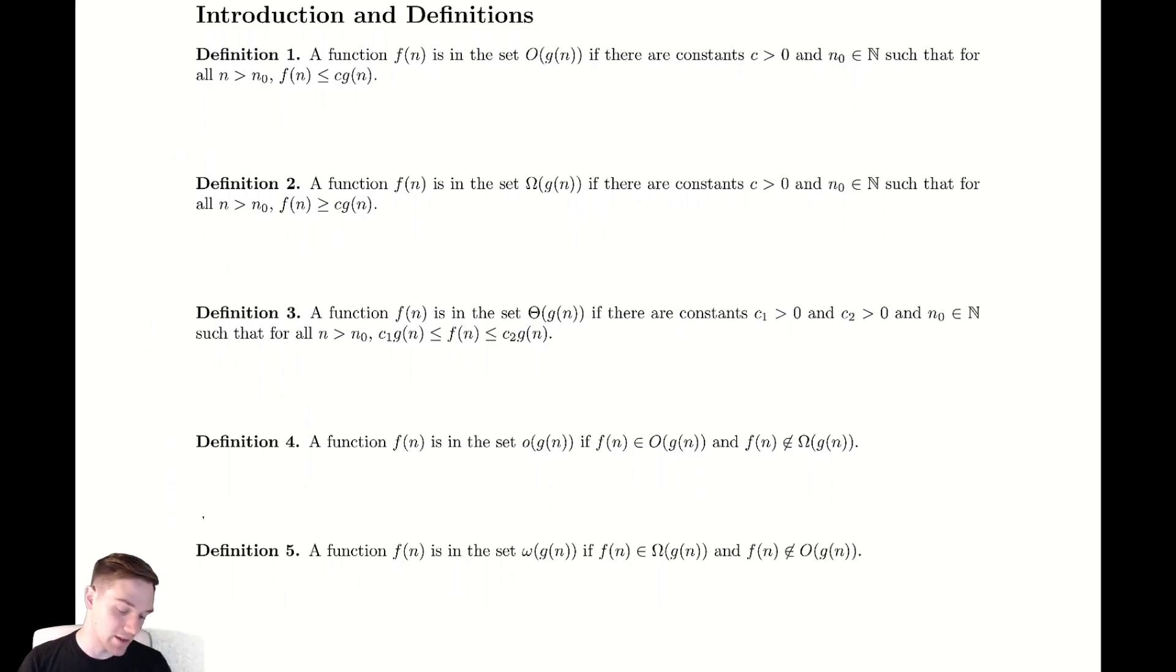So let's begin by looking at our definition for what we're going to call big O. Big O is going to try to help us capture the concept of one function being larger than another. So what we're going to say is that some function we know about, we're using f(n) here to talk about the function we know about, is bounded above in some sense by a different function g(n). So f(n) is our smaller function and g(n) is our bigger function.